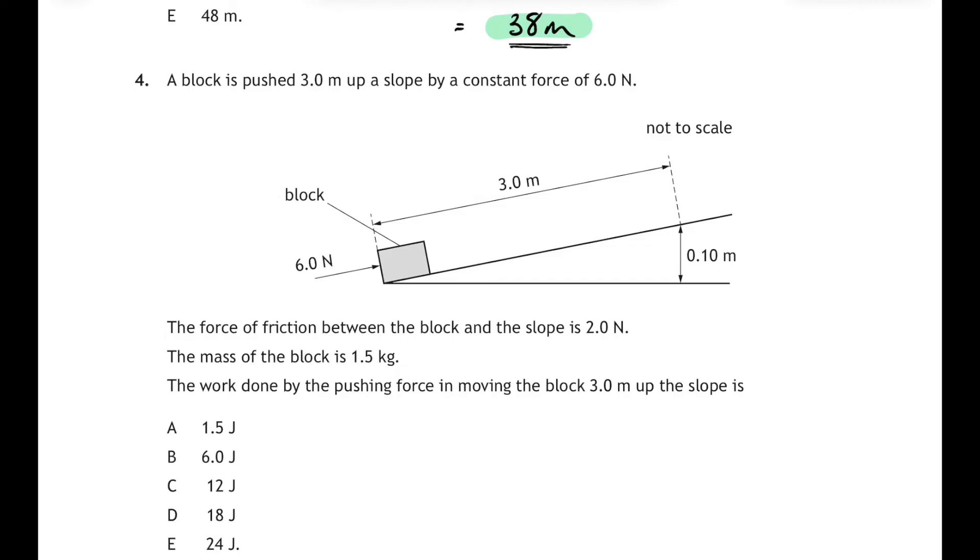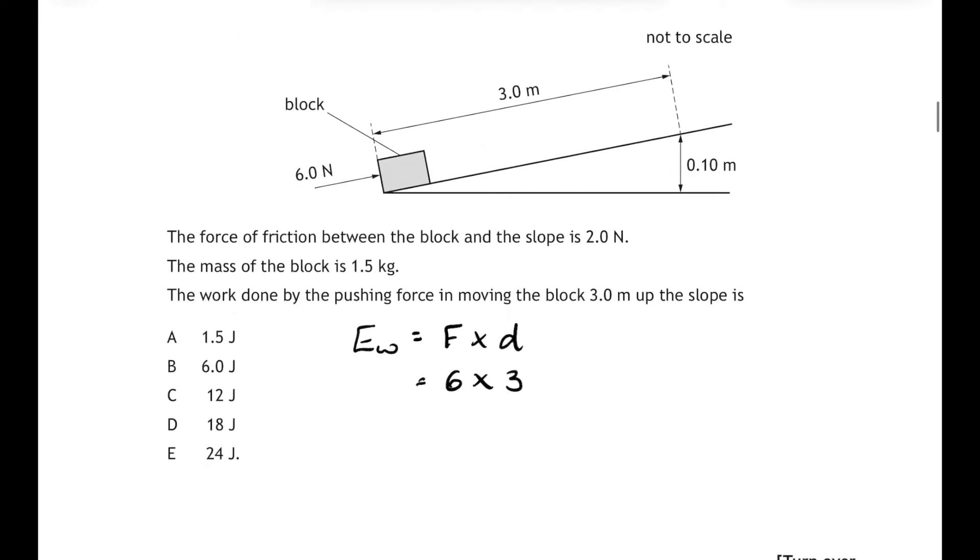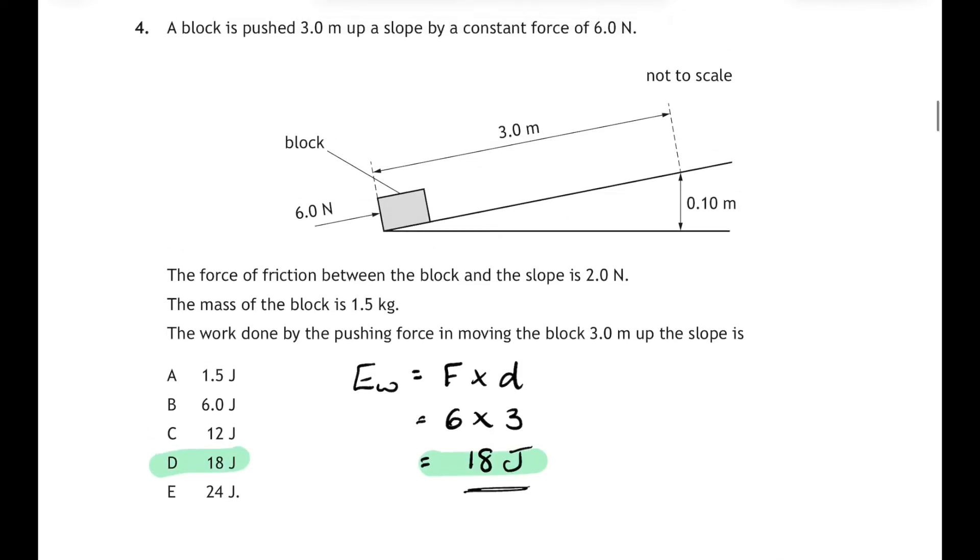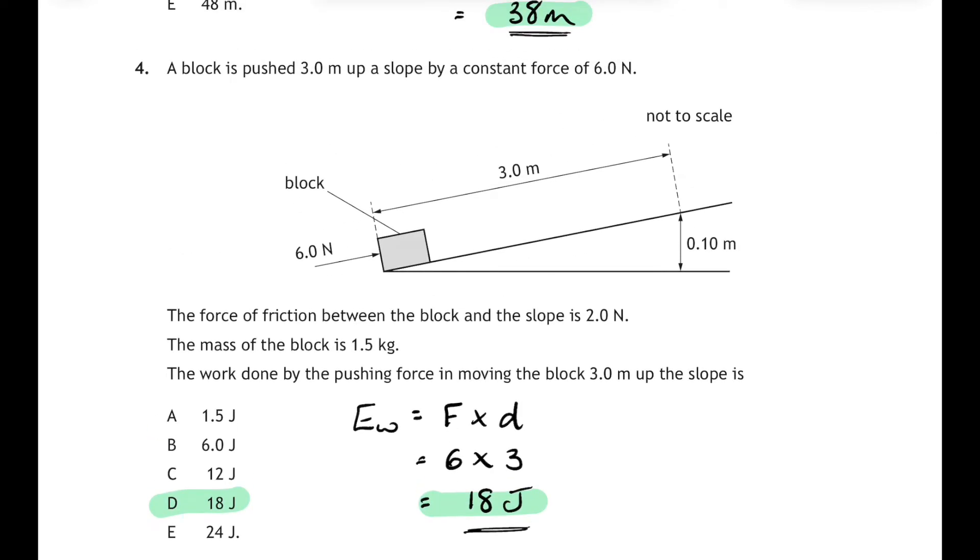Question four: a block is pushed three meters up a slope by a constant force of six newtons. We're told that the friction is two newtons and the mass of the block is 1.5 kilograms, and we have to work out the work done by the pushing force in moving the block three meters up the slope. Well, straight to your relationship sheet here, and we look for the work done equation: work done equals force times distance. It's the force you use times the distance you move, and the pushing force was six newtons and the distance is three meters. It gives us a work done of 18 joules.